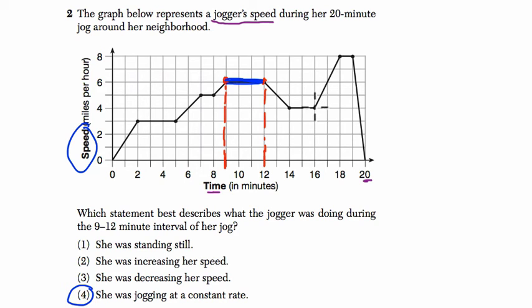So when the line's going up, she's actually increasing her speed. When the line's going down, she's slowing her speed here to a stop. You can see she's stopping at 20 minutes. And these flat lines here where the slope is 0 mean her speed is not changing. So choice 4 is the constant rate. Thank you.